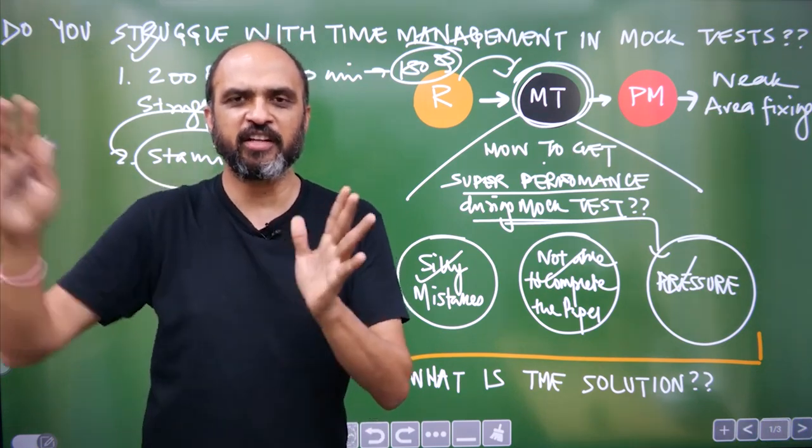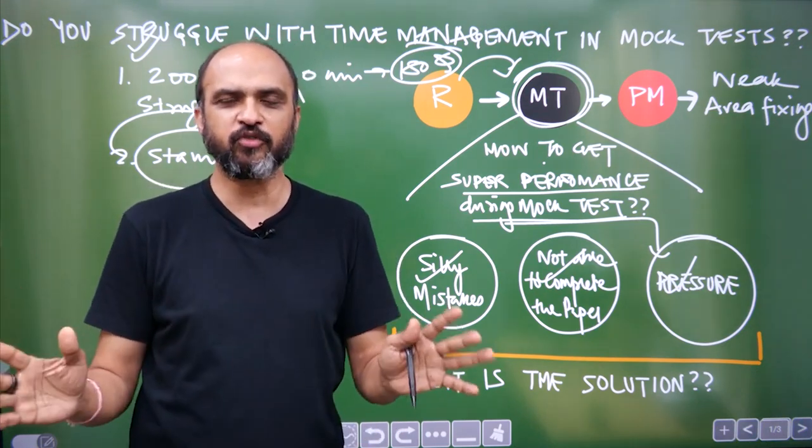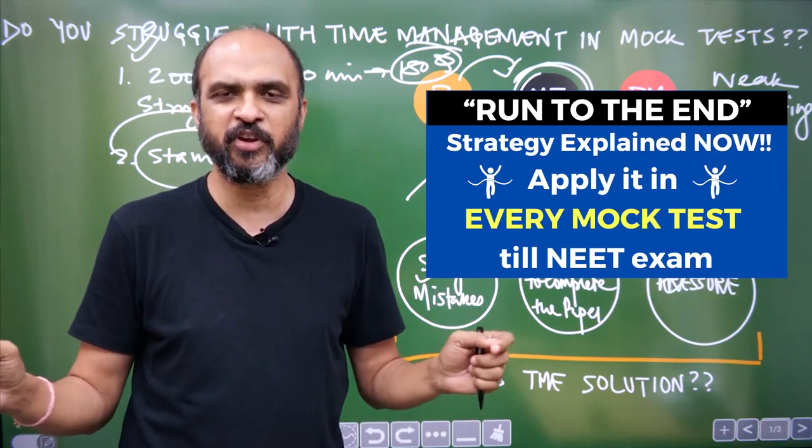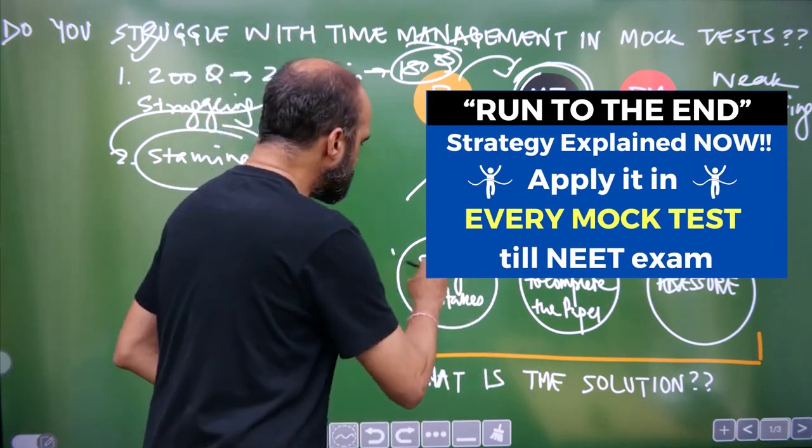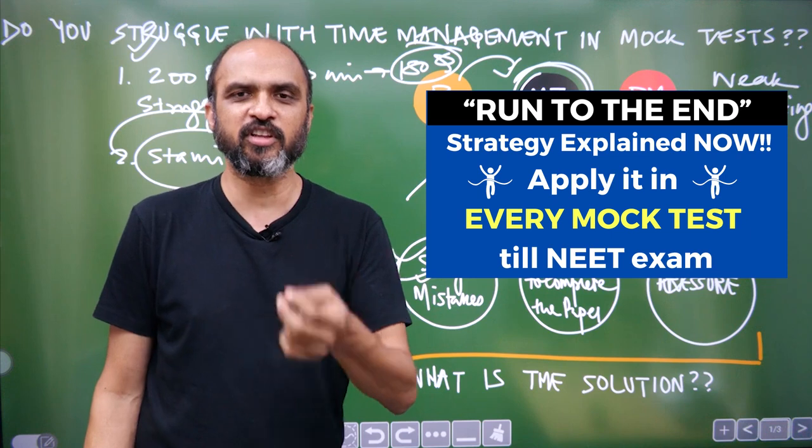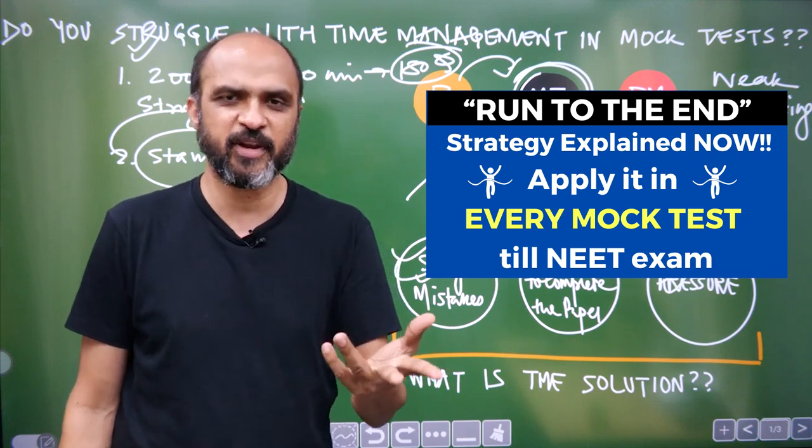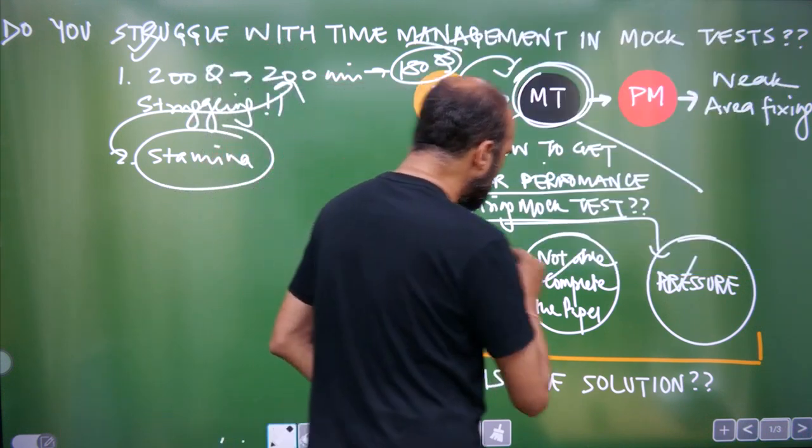What will this result in? You will find at the end 30 questions of physics remaining and you have 12 minutes. You will not be able to finish the paper. Then you will try to do it fast and a lot of silly mistakes will happen. But if you start following this run-to-the-end strategy which I just explained, all of these things will not happen.